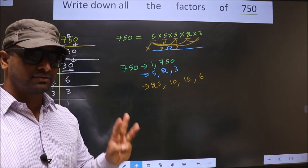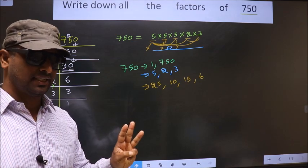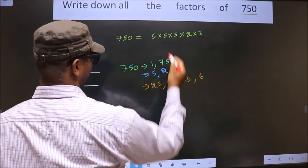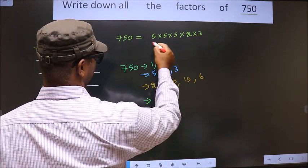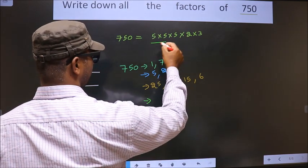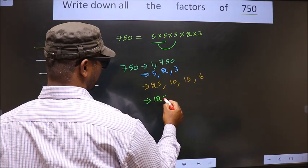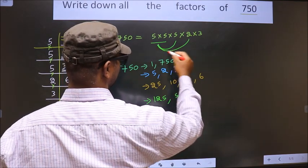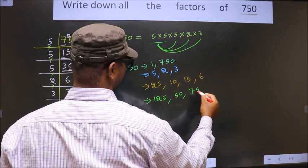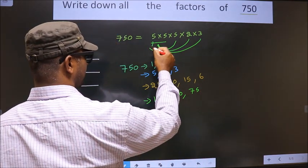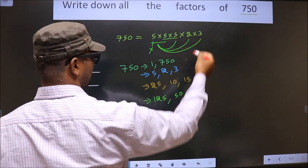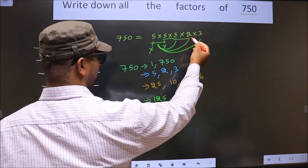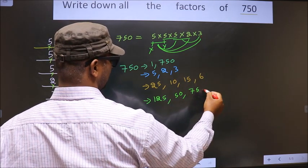Now you take the combination of three numbers. First, I fix these two 5s: 5 into 5 is 25. Combine with another 5: 25 into 5 is 125. Combine with 2: 25 into 2 is 50. Combine with 3: 25 into 3 is 75. Now take 5 into 2 is 10, then combine with 3: 10 into 3 is 30.